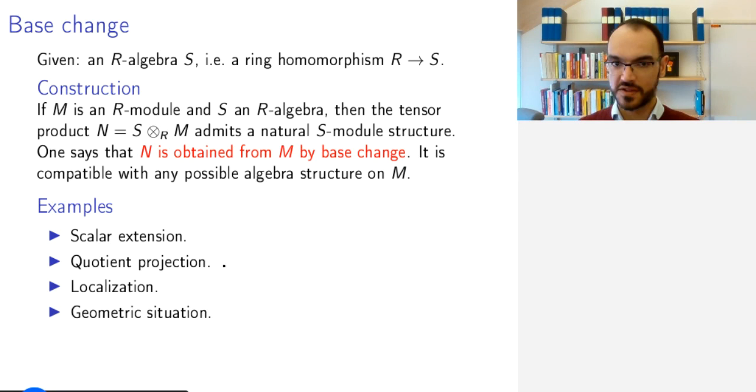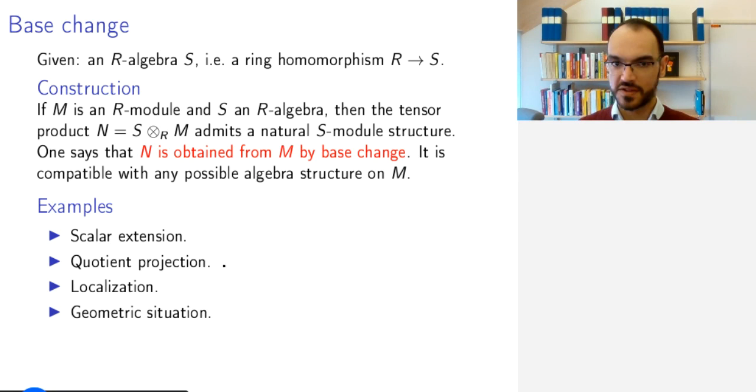Then I have some geometric situation. So pictorially, maybe I have some variety X here, or maybe this is Y, and here I have a variety X and a map of varieties. Then this corresponds to a ring extension from the ring—if these are affine varieties.